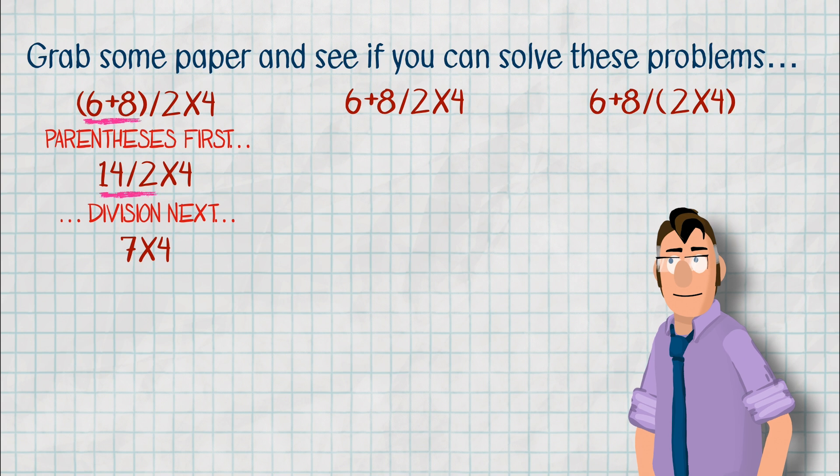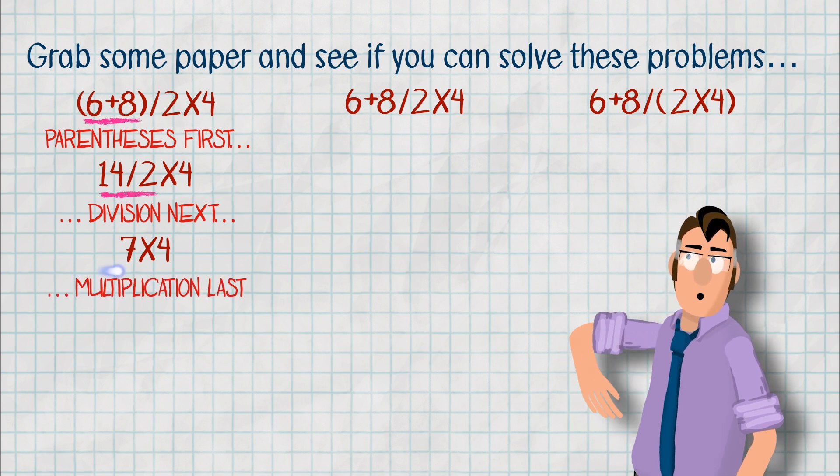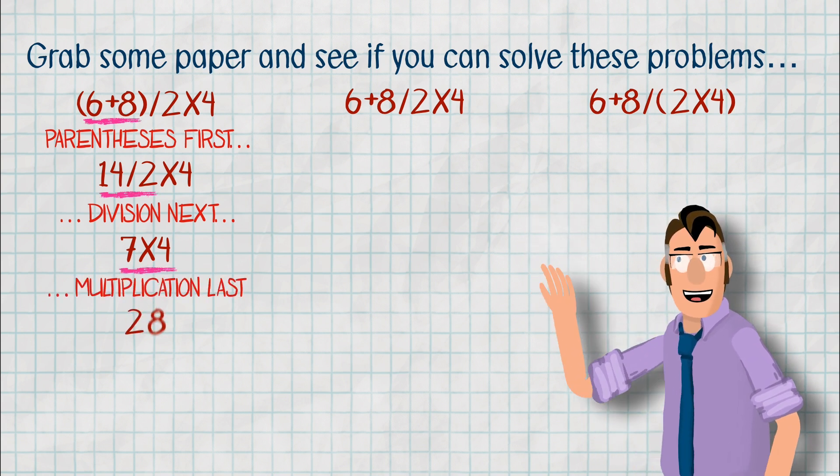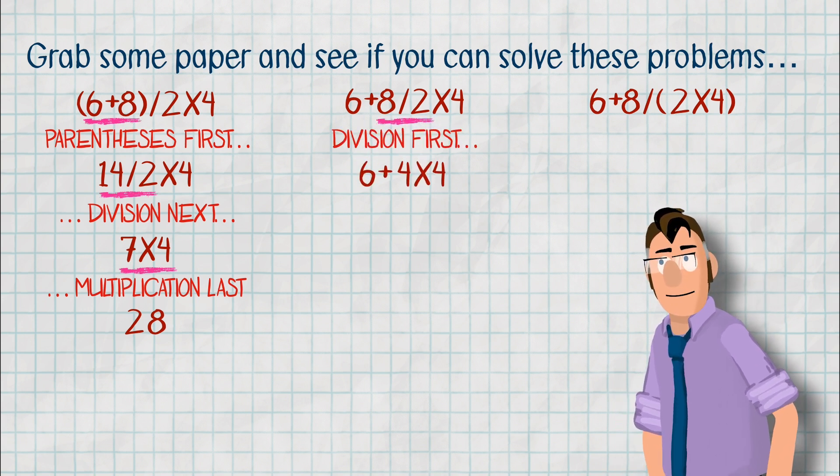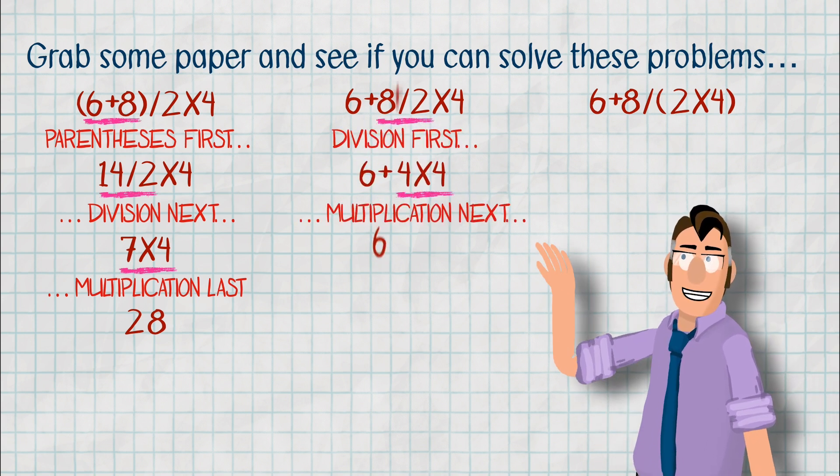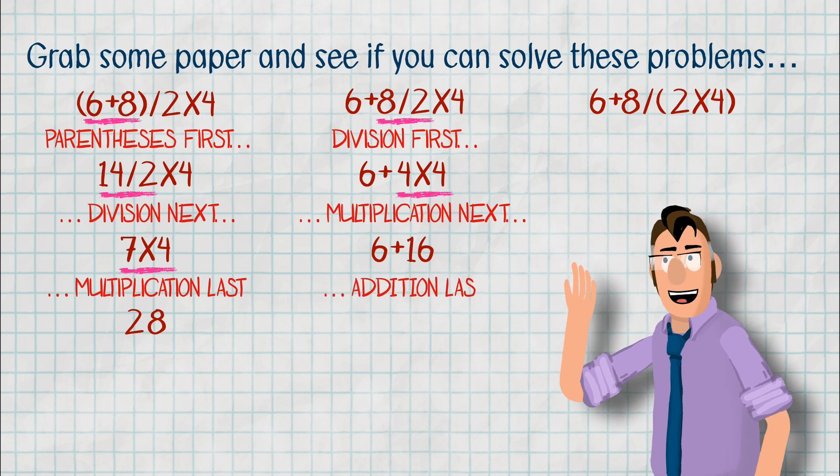So in the first case, parentheses comes first. That's going to turn it into then a division problem. And then finally, you're going to multiply those together. In the second problem, again, we're going to take the division and multiplication first. They're going to take priority. And then finally, we'll add on the addition at the end, getting us a slightly different answer.